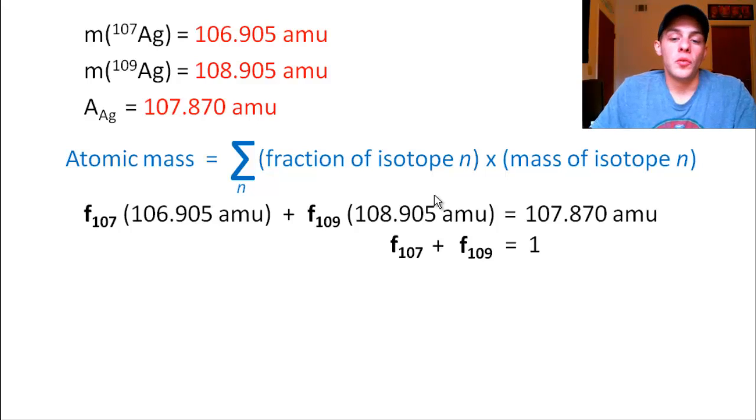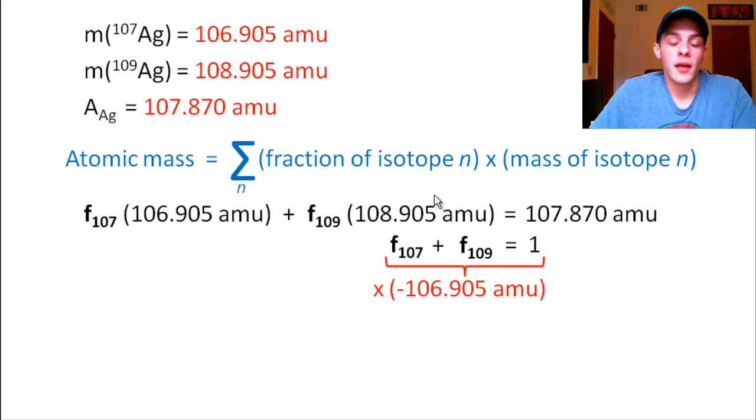So the factor that I'm going to choose, again, I'm trying to eliminate one of my variables. So I'm going to multiply this bottom equation here. I'm going to multiply that by negative 106.905 amu. Okay? So if I multiply the equation by this term, that means I have to multiply each of these individual terms by that negative 106.905 amu. So starting with the f₁₀₇, if we multiply that through, that'll be negative f₁₀₇ times 106.905 amu.